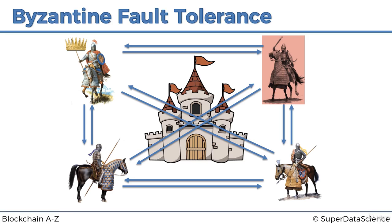The commander issues the order. By the way, the commander himself could be a traitor — that's something they have to keep in mind. If the commander was definitely not the traitor, they would just follow the commander's orders, but the commander could be. So from the perspective of any one of the generals, you don't know who out of the three is a traitor. You have to follow an algorithm that everybody agreed to in advance.